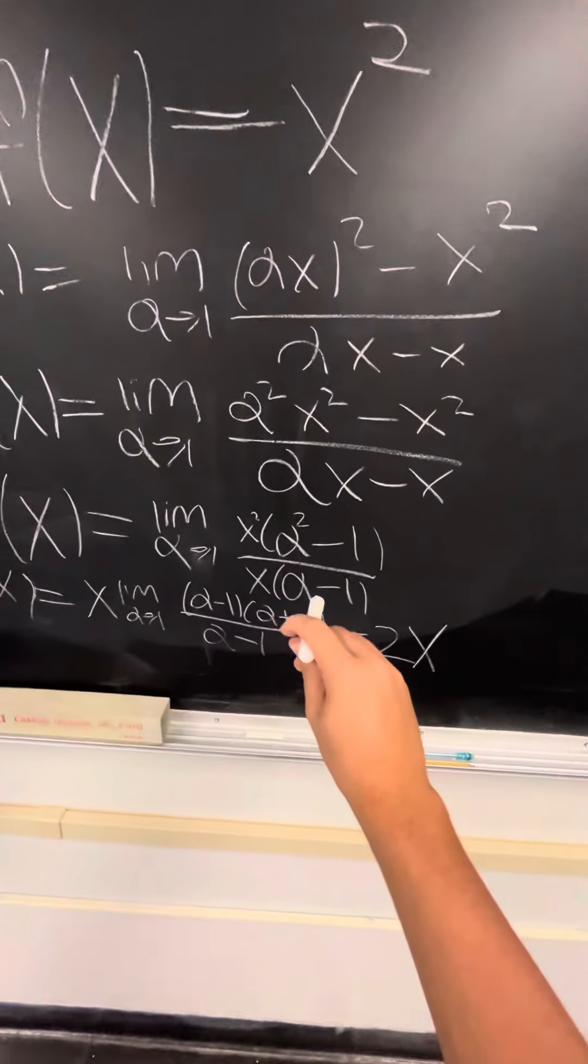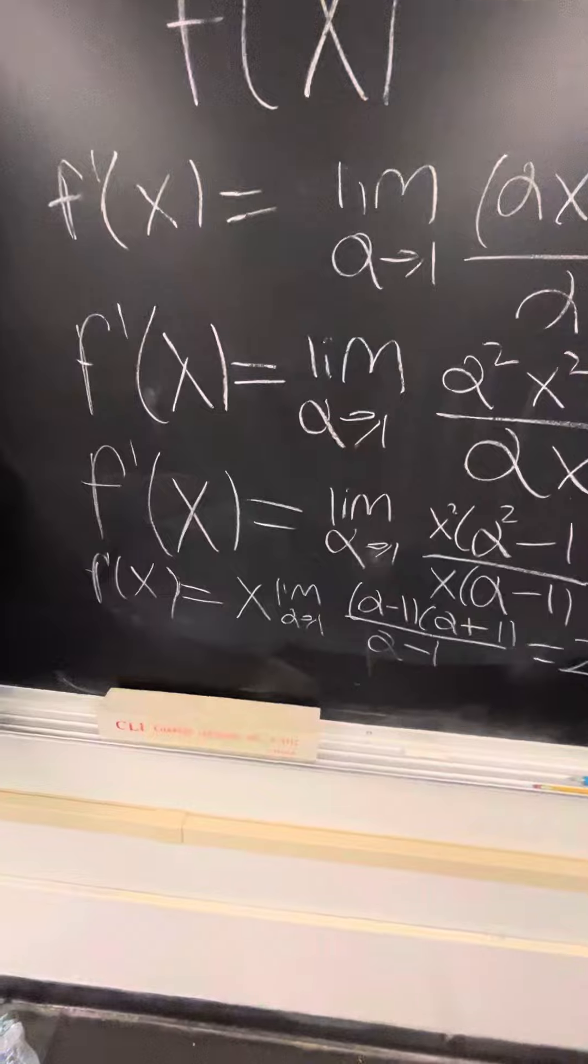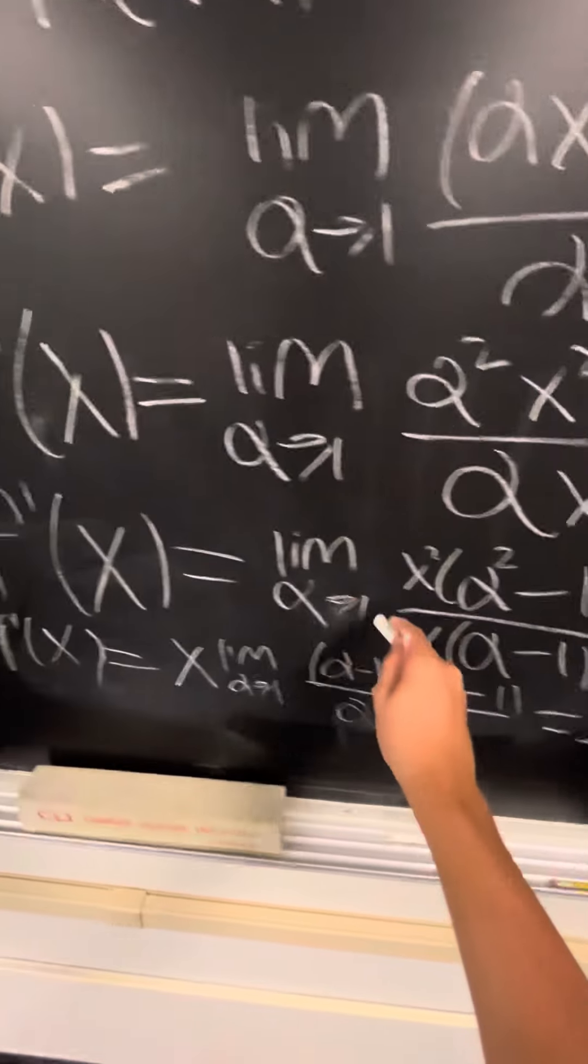Let's factor out the x squared over x. And we get this, looking promising. We will move the x squared over x outside of the limit.